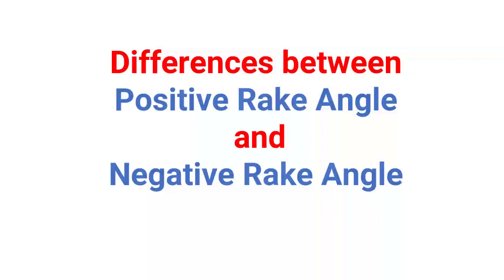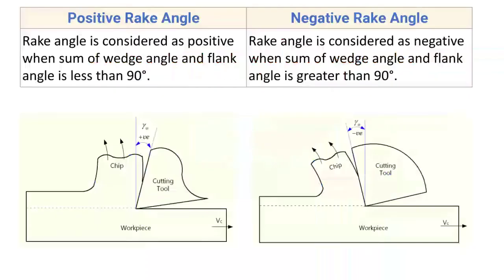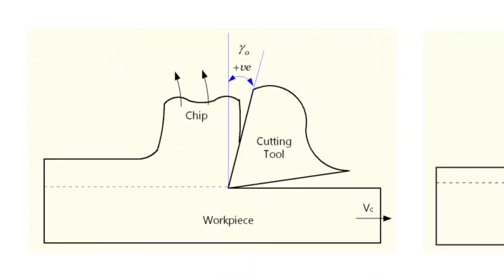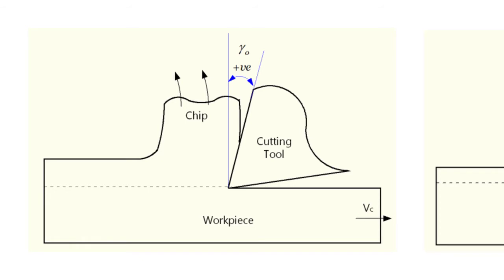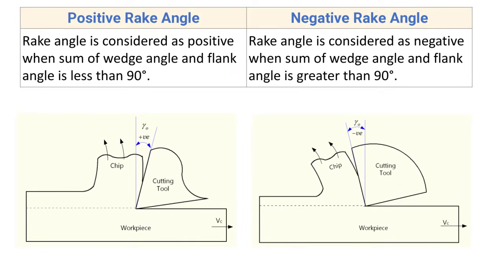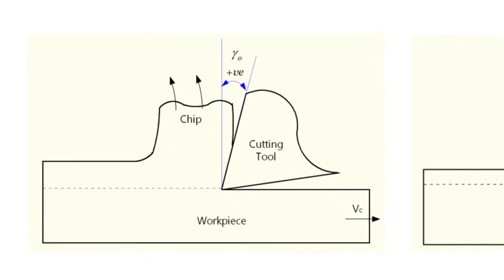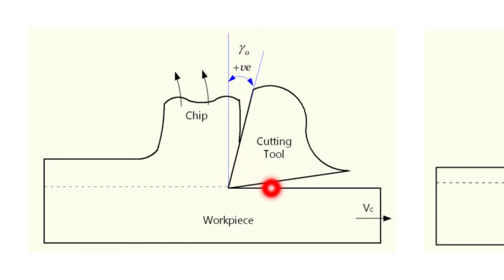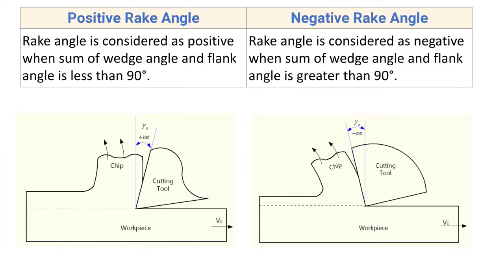In this video we will discuss the differences between positive rake angle and negative rake angle. The rake angle is considered as positive when the sum of wedge angle and flank angle is less than 90 degrees. The wedge angle is the angle between the two faces of the cutting tool, and the flank angle is the angle between the flank and the horizontal line. When such a situation exists, it is known as positive rake angle.